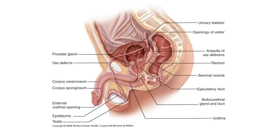Now let's zoom out and look at the rest of the structures of the male reproductive system. We've already covered the testes, the epididymis, and the vas deferens. Now we want to look at the remaining structures, particularly the glands. Some of these glands come in pairs but can't all be seen in this side view — I'll point out which ones are pairs. First, we're going to focus on the prostate gland, sitting just below the bladder.